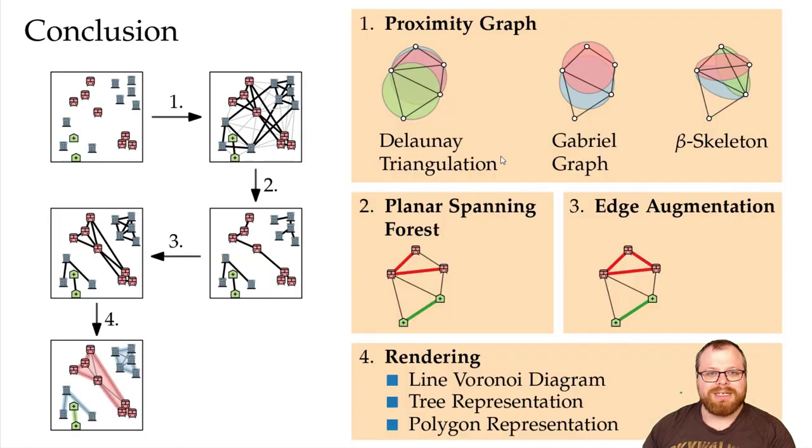Let's conclude. We developed the pipeline for the cluster sets method. We developed heuristics to solve step 2, and we mostly focused on beta skeletons in step 1. For step 4, we considered three different options, where we prefer the line Voronoi and the polygon representation. One could further investigate if there are better algorithms for step 3. Also, it would be interesting if these algorithms can be adjusted when we have more than one category per point. Thank you for watching.